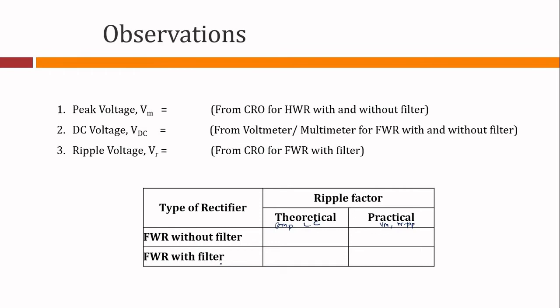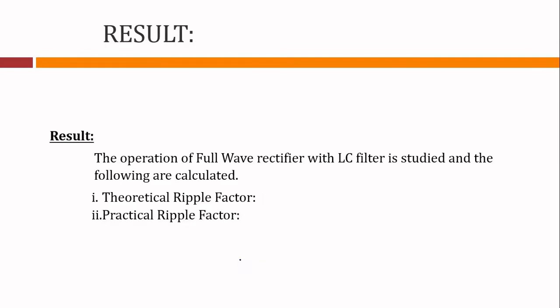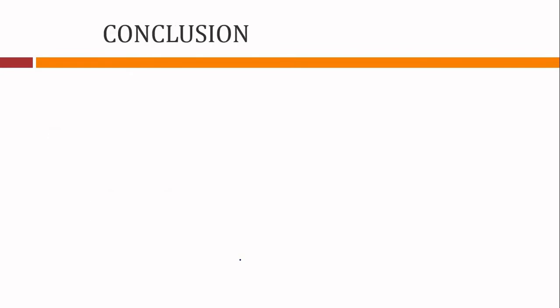For observations, note down the theoretical value of ripple factor using the component values L and C, and the practical value using Vm and Vr peak to peak — both without filter and with filter. There will be some mismatch in the ripple factor obtained from the practical setup compared to the theoretical formula. After watching the demonstration video, write your conclusion in your own words — do not copy from others as it carries marks.